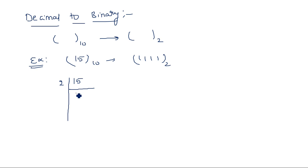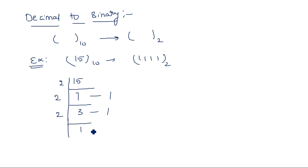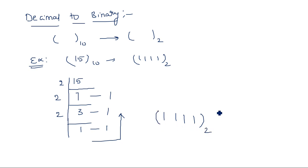For example, convert 15 to binary. Divide: 15 ÷ 2 = 7 remainder 1. 7 ÷ 2 = 3 remainder 1. 3 ÷ 2 = 1 remainder 1. 1 ÷ 2 = 0 remainder 1. Take all remainders in reverse order: 1111. This is the corresponding binary number.